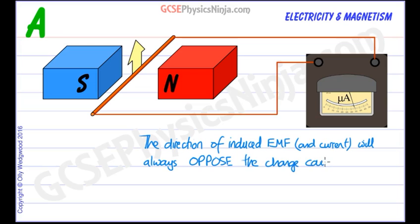This is a really useful little statement which you need to remember. The direction of the induced EMF and therefore of the current will always oppose the change causing it.